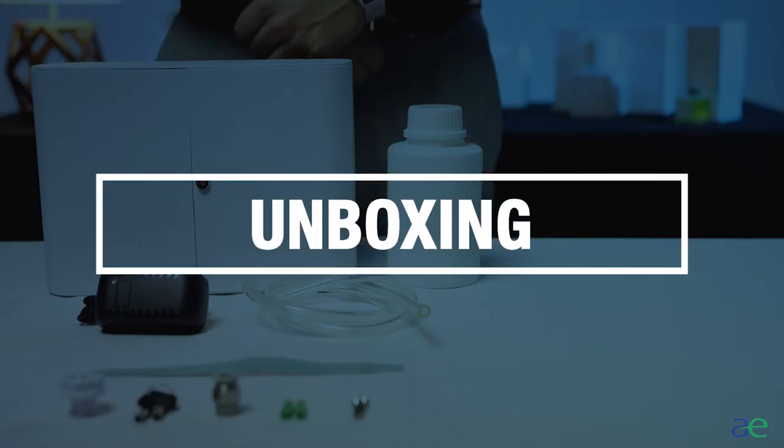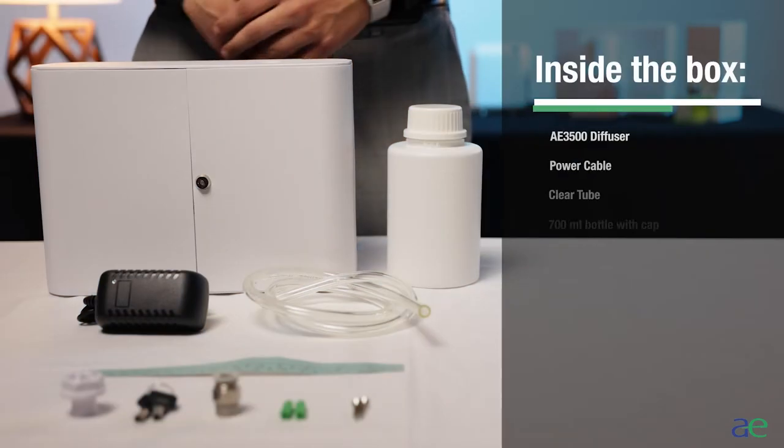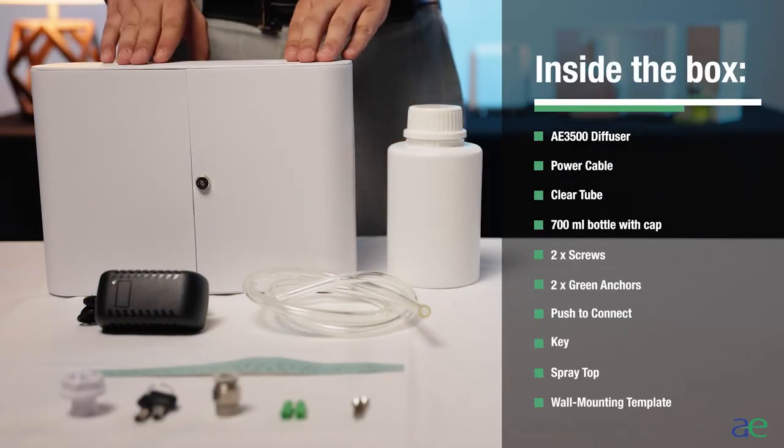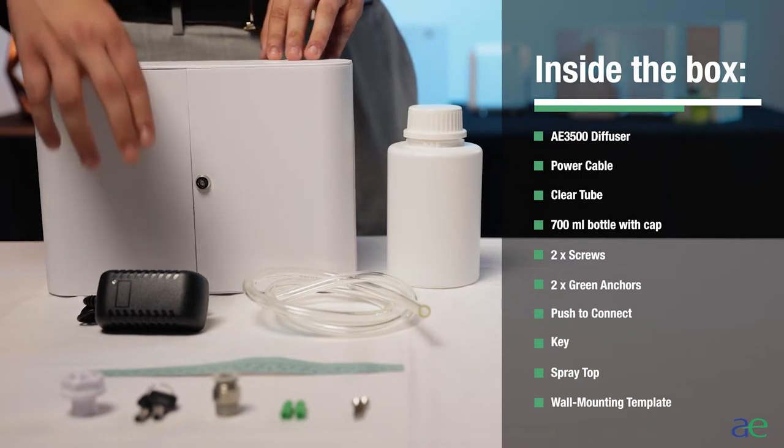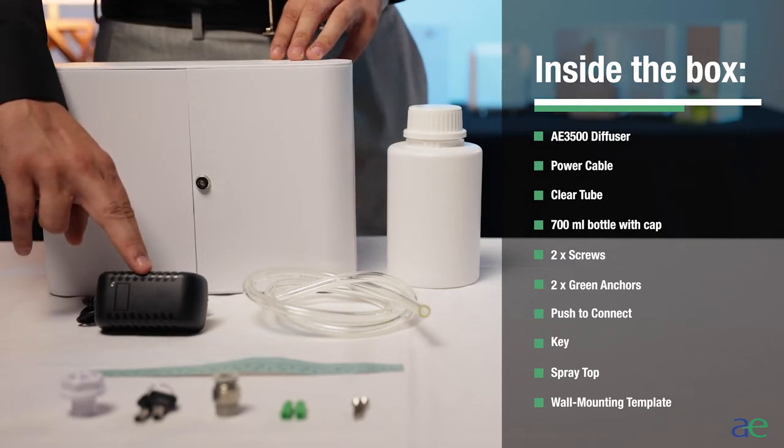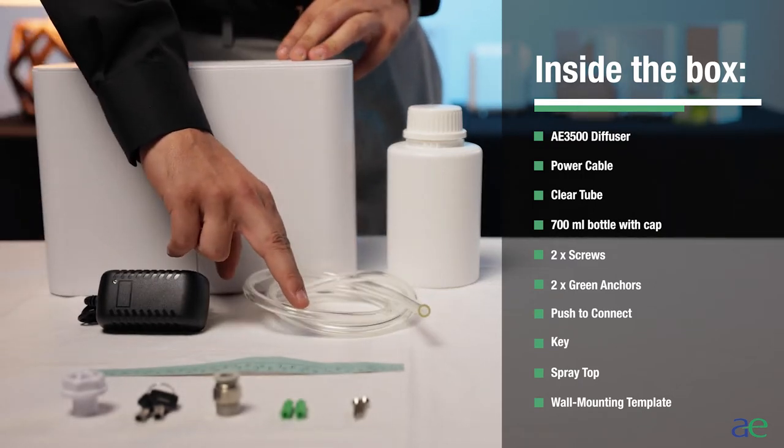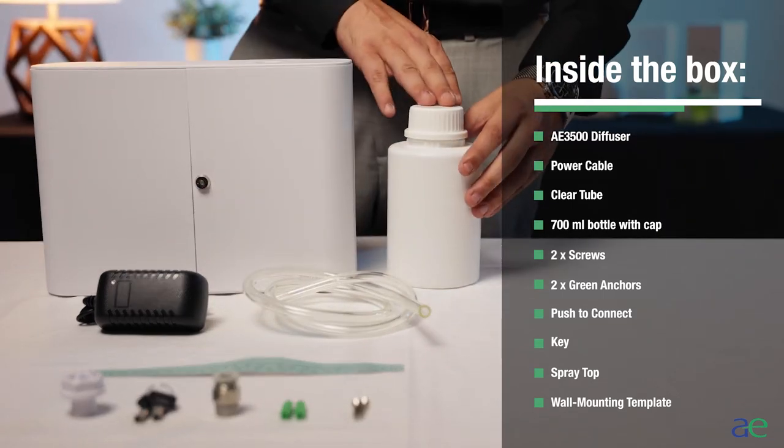Unboxing your AE 3500. Inside the box you will find an AE 3500 diffuser, a power cable, a clear tube, and a 700 milliliter bottle with the cap.